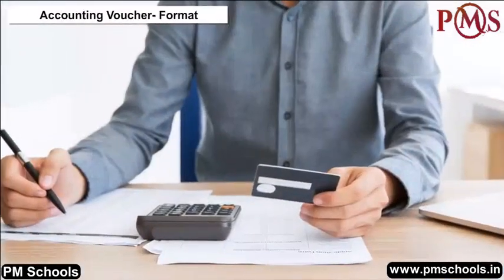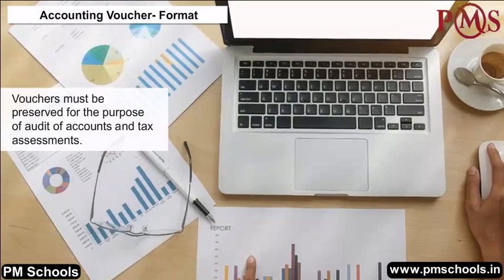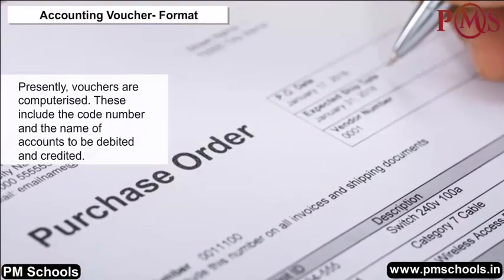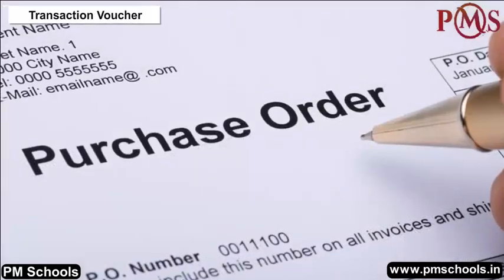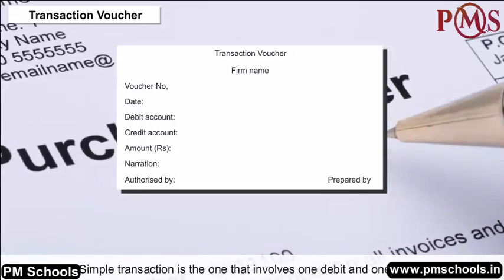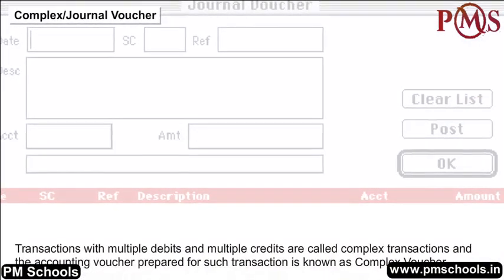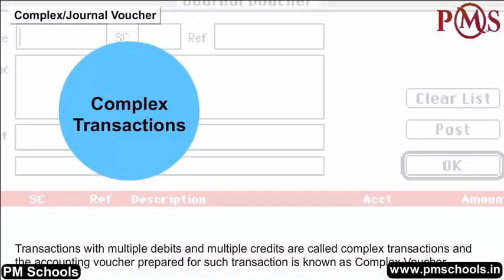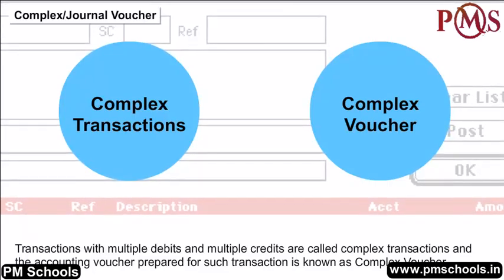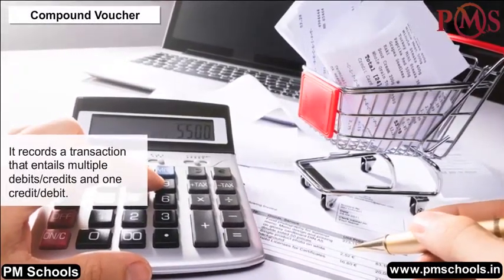There is no set format for an accounting voucher. Vouchers must be preserved for audit of accounts and tax assessments. Presently, vouchers are computerized and include the code number and names of accounts to be debited and credited. A transaction voucher is prepared for a simple transaction involving one debit and one credit. Complex or journal vouchers are used for transactions with multiple debits and multiple credits.